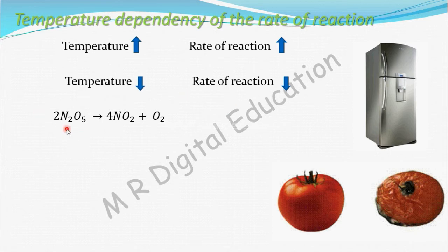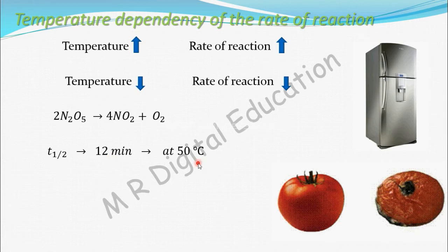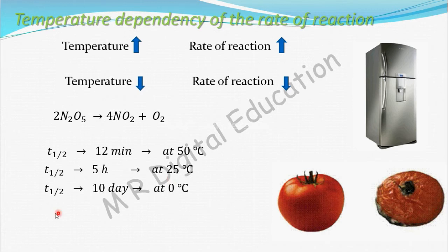Decomposition of N2O5. To get reduced to half of its initial amount, the time required — that is, T half — is 12 minutes at 50 degrees Celsius, 5 hours at 25 degrees Celsius, and 10 days at 0 degrees Celsius.